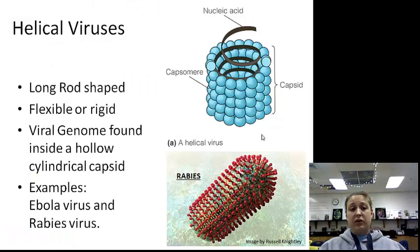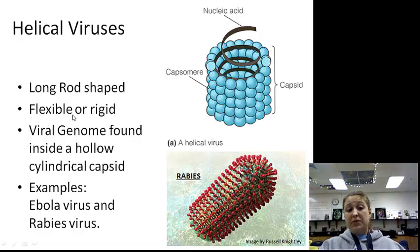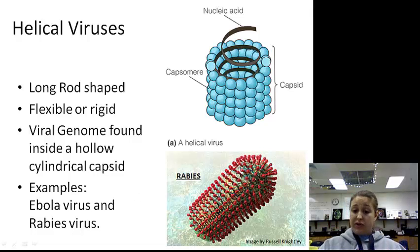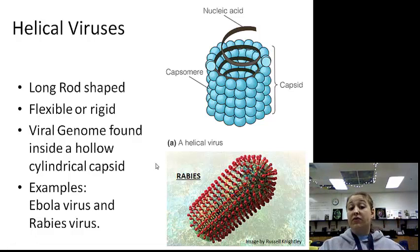Let's look at these in more detail. The helical virus is a long rod shape. The rod can be flexible or rigid. It's got the viral genome in a hollow cylindrical capsid. Two examples: the rabies virus, which is rigid, and the Ebola virus, which is flexible — you know how it moves and loops.